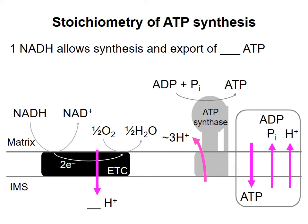Taking all these processes into account, we can calculate how many ATPs can be made and exported using the energy from transfer of two electrons from NADH onto oxygen. Recall, the transfer of electrons from one NADH to O2 allows pumping of 10 protons out of the matrix. If we round to the nearest integer, synthesis of an ATP requires movement of three protons back into the matrix, and export of that ATP and import of the substrates for ATP synthesis requires movement of one additional proton back into the matrix. So overall, synthesis and export of ATP costs the energy from four protons pumped by the electron transport chain. That means that oxidation of one NADH molecule allows synthesis and export of 2.5 ATP molecules.